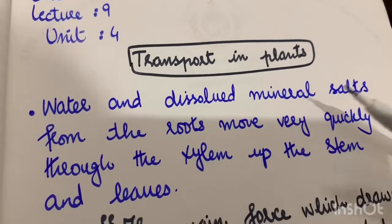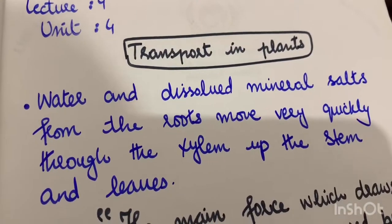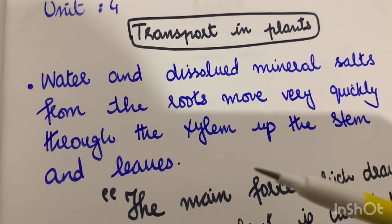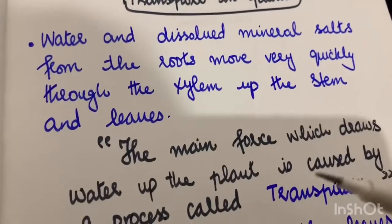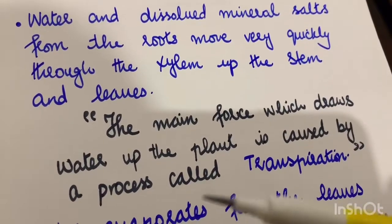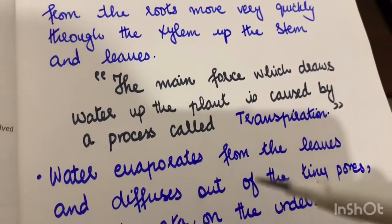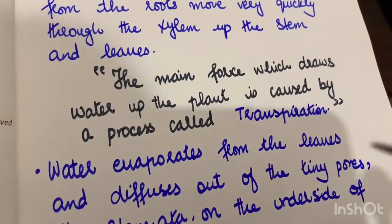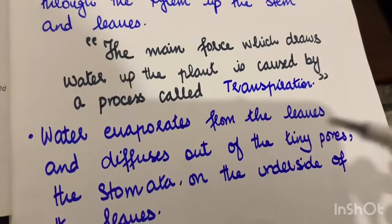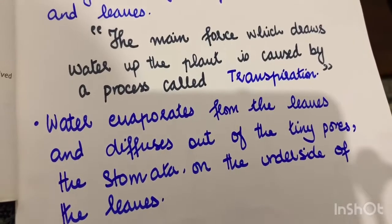Water and dissolved mineral salts from the roots move very quickly through the xylem up the stem and leaves. The main force which draws water up the plant is caused by a process called transpiration. Water evaporates from the leaves and diffuses out of the tiny pores — the stomata — on the underside of the leaves.